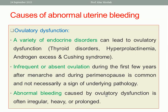Ovulatory dysfunction may occur with many endocrinological disorders, including thyroid dysfunction, androgen excess, Cushing syndrome, hyperprolactinemia, and hypothalamo-pituitary axis abnormalities. Infrequent or absent ovulation during the first few years after menarche and during perimenopause is common and not necessarily a sign of underlying pathology. Abnormal bleeding caused by ovulatory dysfunction is often irregular, heavy, or prolonged.